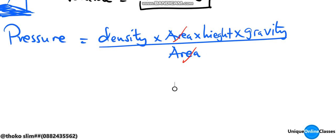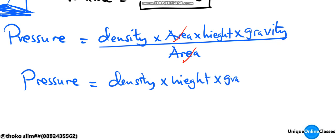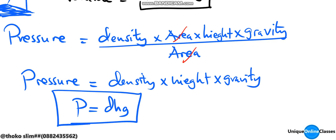Then pressure is equal to density times height times gravity, which can be written as P equals ρhg. That's our formula which we needed.